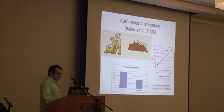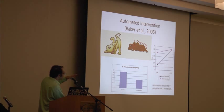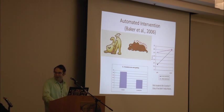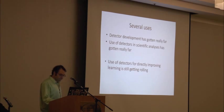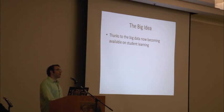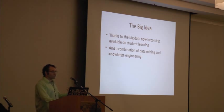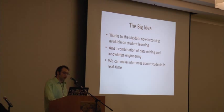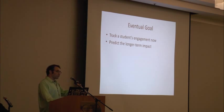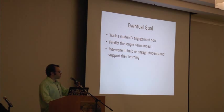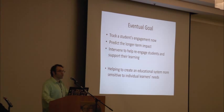We also use these in automated interventions. For example, a Scooby-Doo character gets upset if you game the system — it helped students game the system less, helped students who were behind catch up, and middle school boys loved to make the puppy mad, so it didn't entirely work according to plan. We've also used the systems for curricular refinement, finding out what material disengages students to then redesign it. The big idea is that with the kind of data we can get on student learning, and this combination of data mining and knowledge engineering, we can make inferences about students in real time that are predictive of long-term outcomes — tracking a student's engagement now, predicting the longer-term impact, and intervening to help re-engage students and support their learning, creating an educational system more sensitive to individual learners' needs.